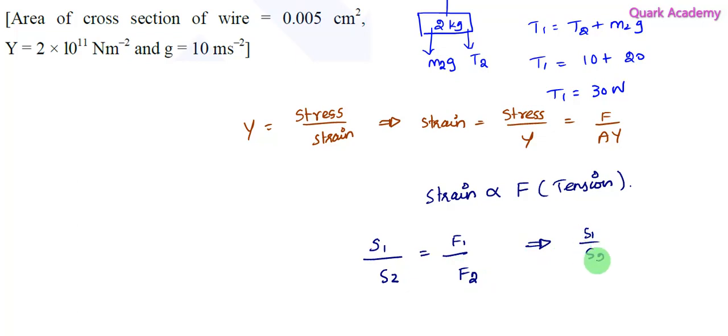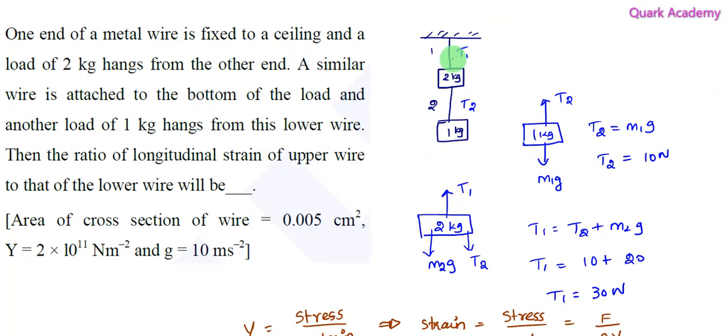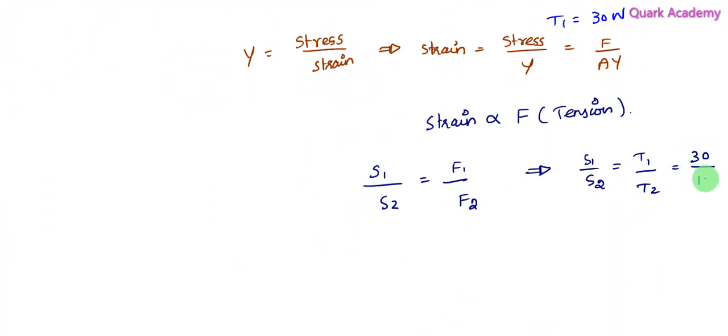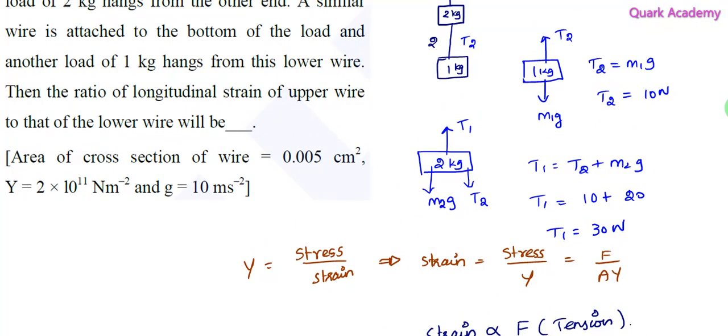So this becomes T1 by T2, because T1 and T2 are the forces acting on the wires. This is 30 and this is 10. So this is 30 divided by 10, which equals 3. The longitudinal strain ratio is 3.